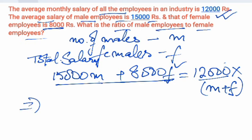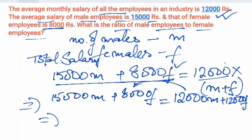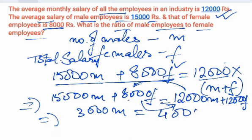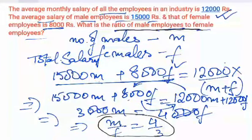So solving: 15,000M plus 8,000F equals 12,000M plus 12,000F. Bringing 12,000M to the left gives 3,000M, and taking 8,000F to the right gives 12,000F minus 8,000F equals 4,000F. The 1,000s cancel, and we get M upon F equals 4 upon 3. So the ratio of male employees to female employees is 4 is to 3.